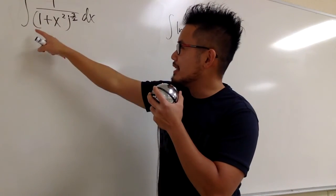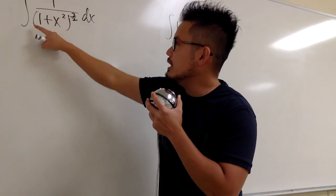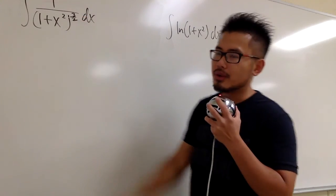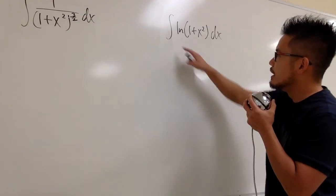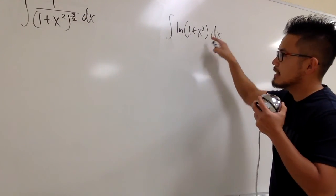Two integrals on the spot. The first one: the integral of 1 over (1 plus x squared) raised to the 3 over 2 power. And the second one: the integral of ln of (1 plus x squared).